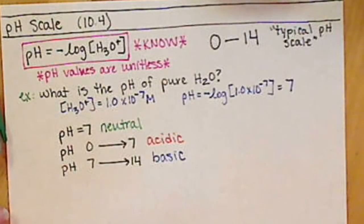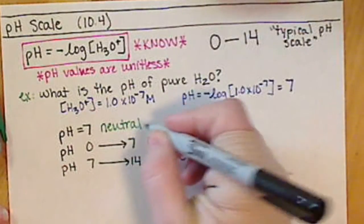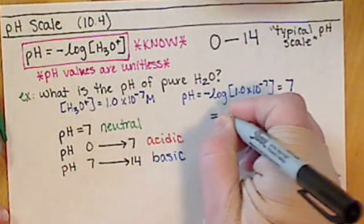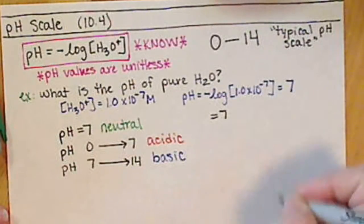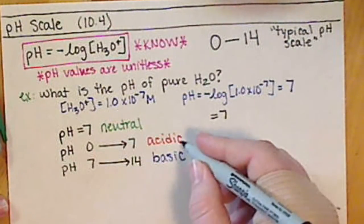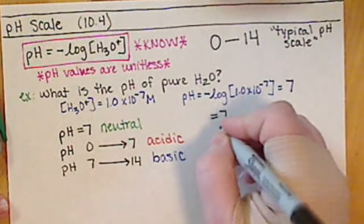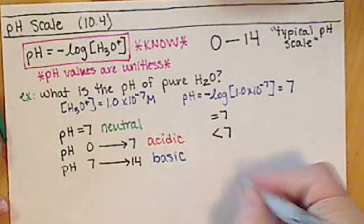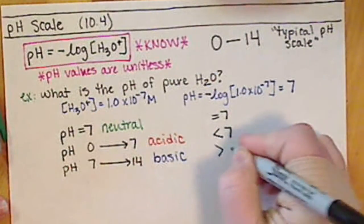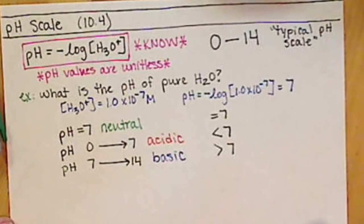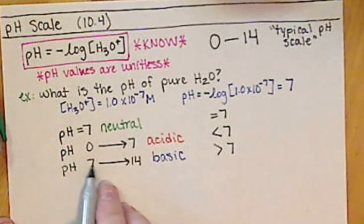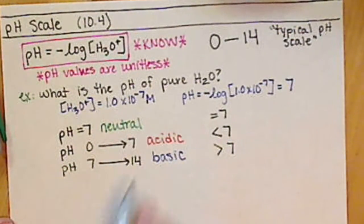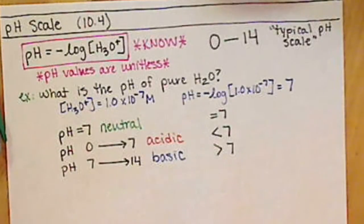To summarize: a neutral solution has a pH equal to 7, acidic is when it's less than 7, and basic is when it's greater than 7. These values from 0 to 14 are just our typical range.